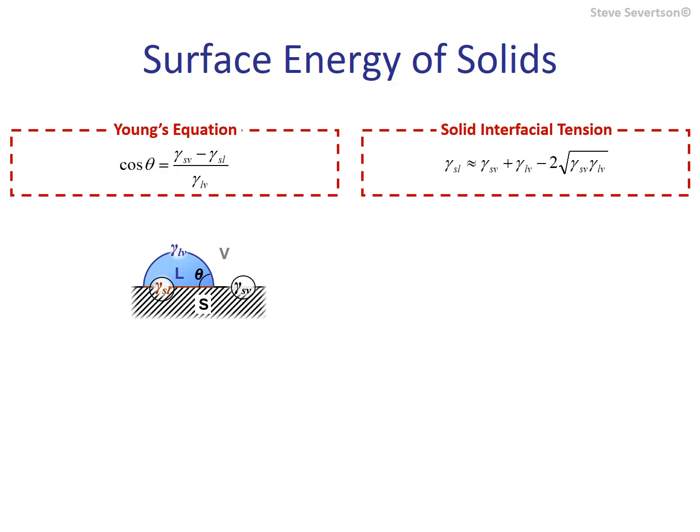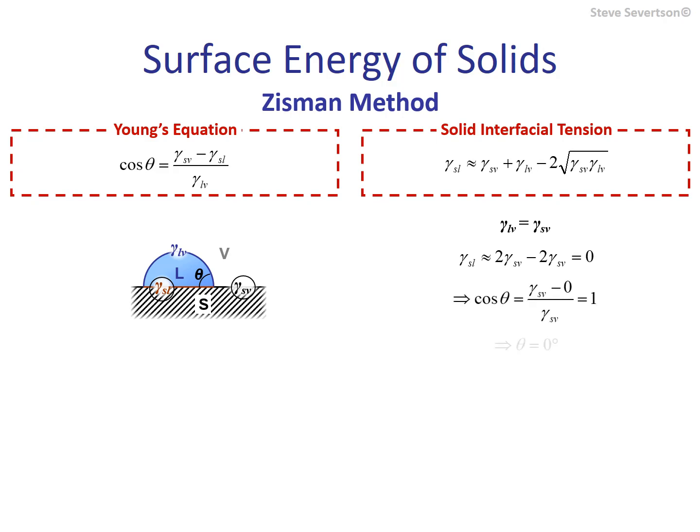The first method we will discuss is the Zisman method, or analysis. This technique is often viewed as being outdated, but actually provides one of the more accurate estimates of surface energy for low-energy surfaces. This is an experimental approach aimed at identifying the probe liquid with a surface tension that is equal to the surface-free energy of the solid. According to our equation for interfacial energy, when this occurs, the solid-liquid interfacial energy is equal to zero, and the contact angle for the probe liquid on the solid surface is zero degrees.